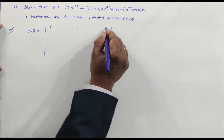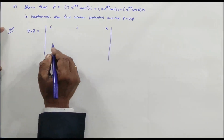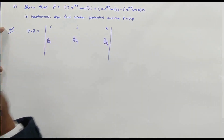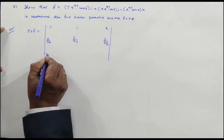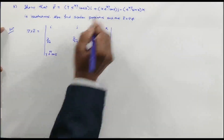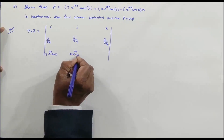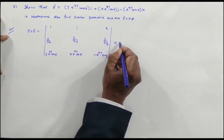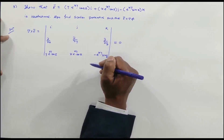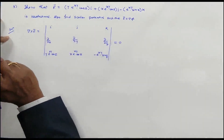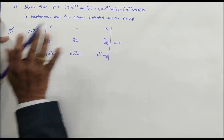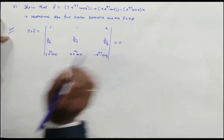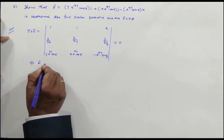Solving this determinant — which follows the same procedure as the previous problem — yields del × F̄ = 0 vector. Therefore F̄ is irrotational. This determinant evaluation is left as an exercise based on the practice already done. Del × F̄ = 0 directly, and this implies F̄ is irrotational.